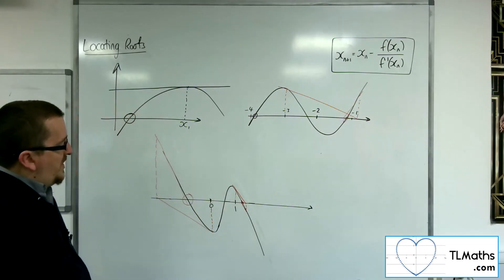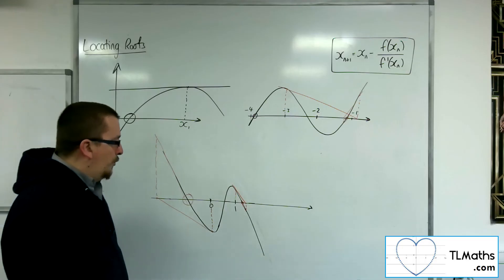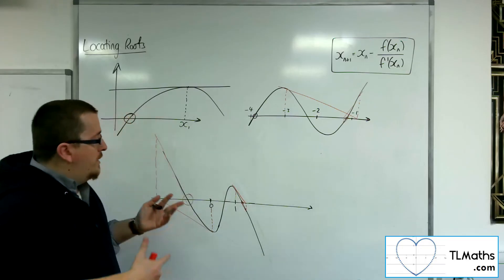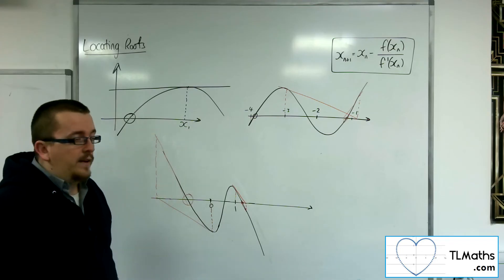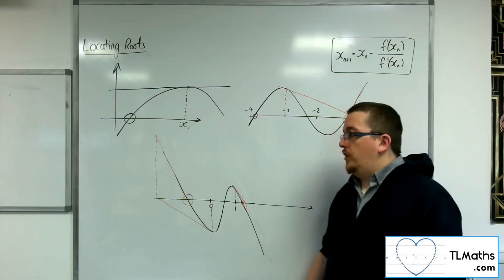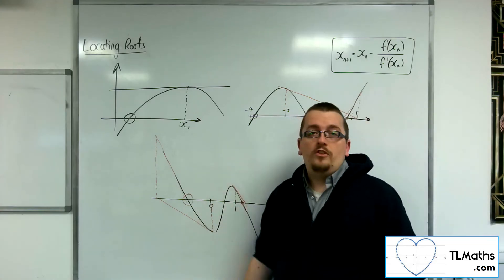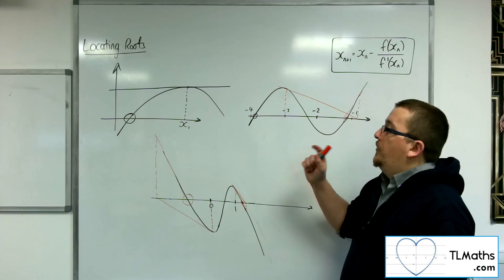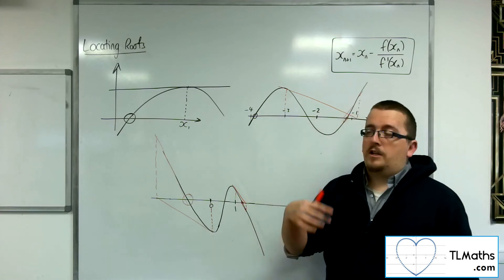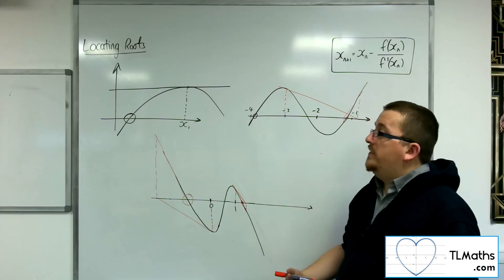So there are particular starting values that will cause problems. And obviously, if I knew what the curve looked like in general, I could pick a point that's close to it. So I can avoid this problem and just aim it by sight. And you might be thinking, well, why wouldn't you just do that in the first place?